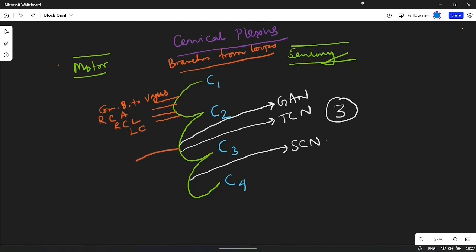From C2, C3 loop only one nerve that is nerve to sternocleidomastoid muscle. And from C3, C4 loop again one nerve that is nerve to trapezius muscle. And the phrenic nerve which is a mixed nerve is also included in the branches from loops.